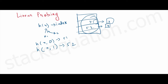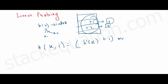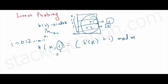Now let's understand linear probing. In linear probing we use the expression h(k, i) = (h'(k) + i) mod m. Don't be intimidated — it's a simple expression. k is the input key for which we want to find the index, and i is the probe number. i starts from 0 and can go all the way to m minus 1, where m is the number of indices in the hash table.